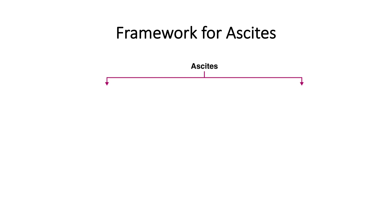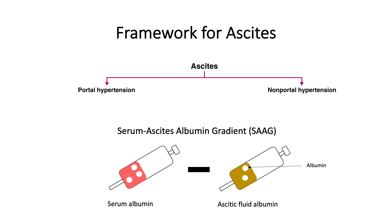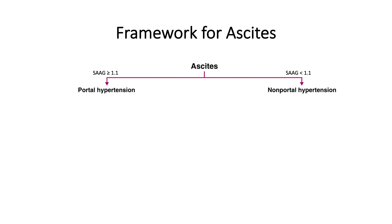Ascitic fluid can form in patients with portal hypertension or in patients without portal hypertension. To determine which scenario applies, you calculate the serum ascites albumin gradient, or SAAG. To calculate the SAAG, you take the serum concentration of albumin and subtract from it the ascitic fluid albumin concentration, which you would know if you have sampled the fluid with a procedure called a paracentesis. It is important to know whether the SAAG is greater than or equal to 1.1 or less than 1.1, as this tells you whether the fluid formed as a result of portal hypertension or not.